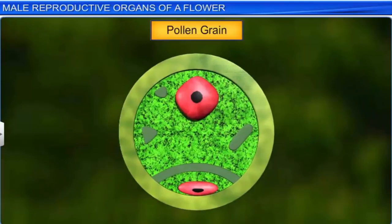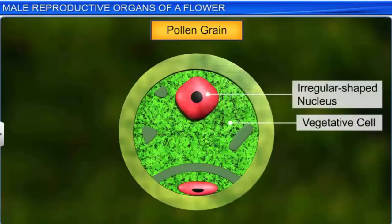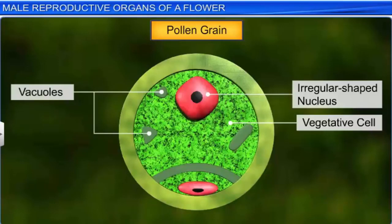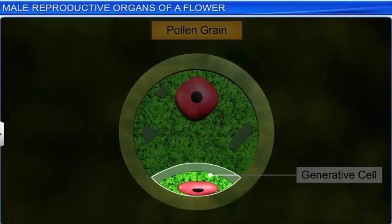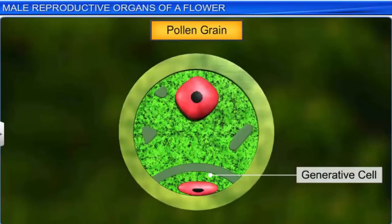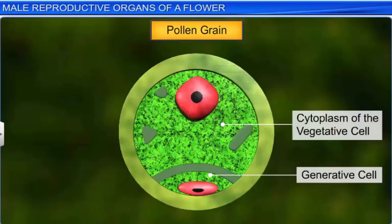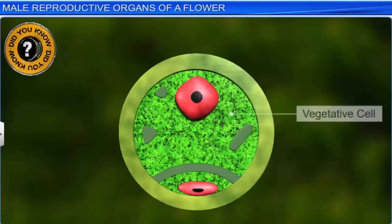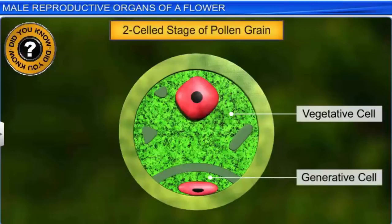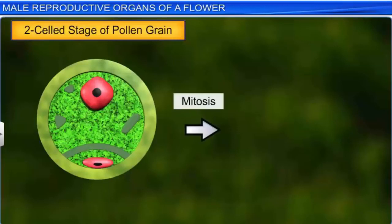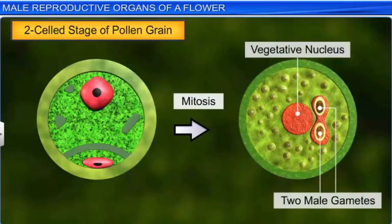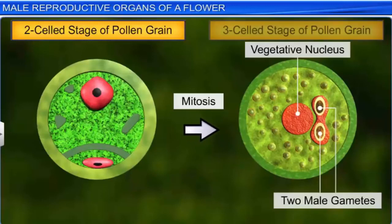The larger cell, known as the vegetative cell, is characterized by a large irregular-shaped nucleus, vacuoles, and abundant food reserves. While the smaller cell, known as the generative cell, is distinctly spindle-shaped and possesses dense cytoplasm. Moreover, the generative cell floats in the cytoplasm of the vegetative cell. The vegetative cell and generative cell represent the two-celled stage of the pollen grain. Later, the generative cell undergoes mitotic division to produce two male gametes, and the pollen grain is now said to be at the three-celled stage.